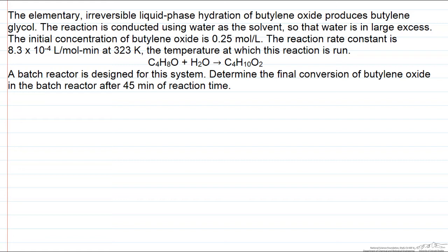A problem dealing with a batch reaction system: the reaction of butylene oxide with water, which is the solvent, to make 1,2-butanediol. You're given kinetic information about this reaction including the value of the rate constant at the temperature of interest. This is a liquid phase reaction with water as the solvent.